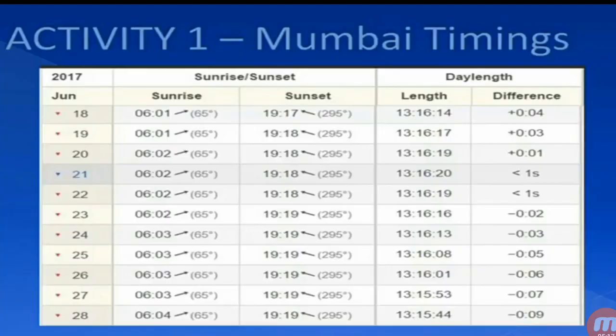Here we have one small activity. I took timings for Mumbai — dates from 18 to 28 — and have recorded sunrise and sunset times, day length, and the difference. From date 21 onward, the duration has changed. The day length is increasing — by 20 seconds, 90 seconds — and the difference is clearly shown here, increasing gradually.